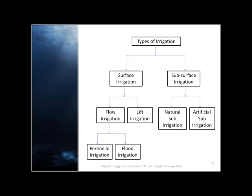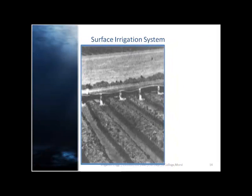The next topic is types of irrigation. Irrigation may be divided into two types: surface irrigation and subsurface irrigation. Surface irrigation may also be divided into two parts: flow irrigation and lift irrigation. Subsurface irrigation is divided into natural sub-irrigation and artificial sub-irrigation. Flow irrigation is further divided into perennial irrigation and flood irrigation.